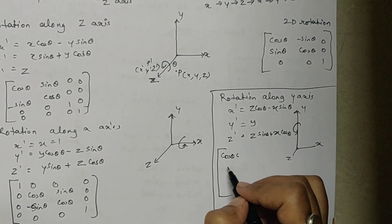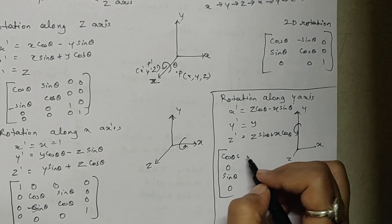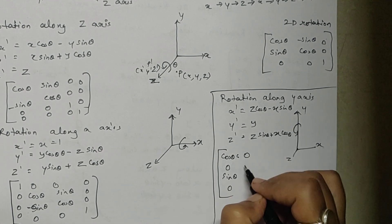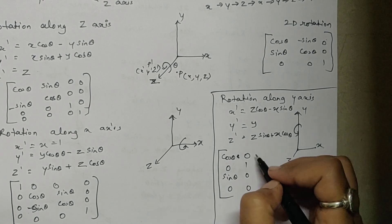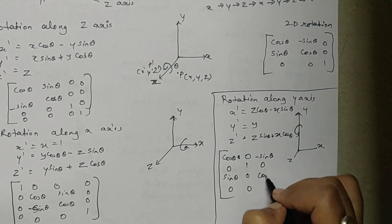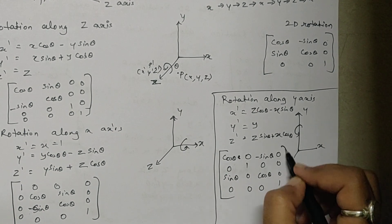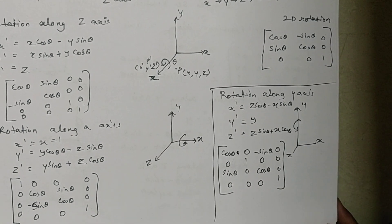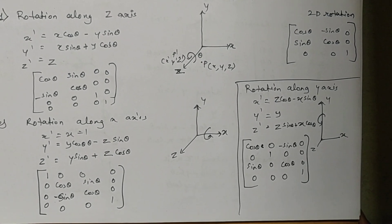The rotation matrix along y axis is: cos theta, 0, sin theta, 0 / 0, 1, 0, 0 / minus sin theta, 0, cos theta, 0 / 0, 0, 0, 1. This is my matrix for rotating an angle along y axis. We have now seen rotation along x axis, rotation along y axis, and rotation along z axis. Thank you.